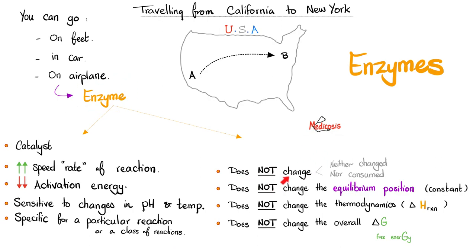Enzymes do not get changed in the reaction. They are neither changed nor consumed in the reaction. Just like the airplane. After the airplane delivers you to New York, we do not throw the airplane in the trash. We can reuse it again because it was not consumed. Did your airplane change your destination? No. You still arrived in New York. So, the equilibrium position or the equilibrium constant is the same. Moreover, enzymes do not change the thermodynamics. The heat of the reaction will not change. When you travel to New York in an airplane, this will not make New York cool in the summer and hot in the winter. Moreover, enzymes do not change the overall free energy of the reaction as we will discuss soon.